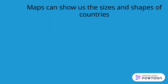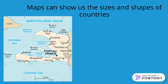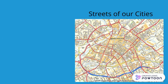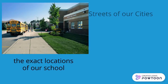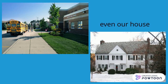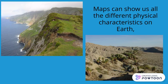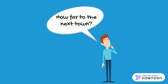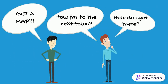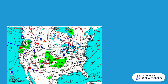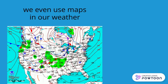Maps can show us the sizes and shapes of the countries, the streets of our city, the exact locations of our school, even our house. Maps can show us all the different physical characteristics on Earth, how far it is to different places, how we can plan a route to get to those different places. We even use maps in our everyday weather.